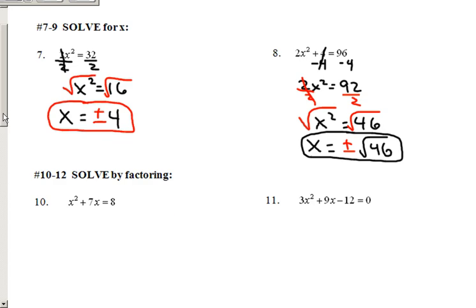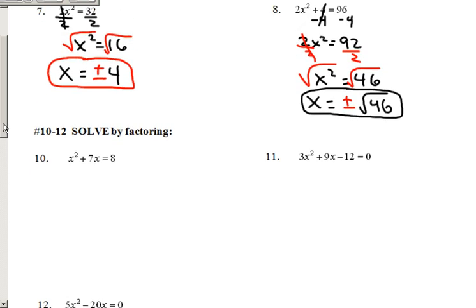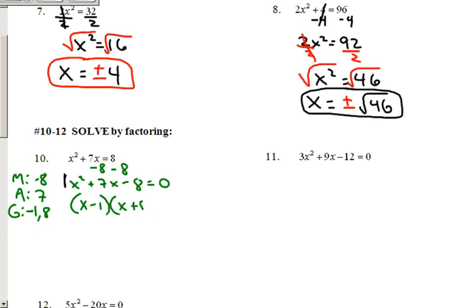They don't always work out that easily. If you have one like number 10, what we have to do here is we have to get everything on the same side. So we've x squared plus 7x minus 8 equals 0. Now, if you take away this part of it, that looks exactly like an MAG problem. So what we're going to do is MAG, like we always would. So I'm going to have my M negative 8, my A 7, that means my G is going to be negative 1 and positive 8.